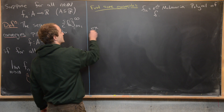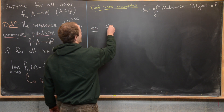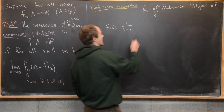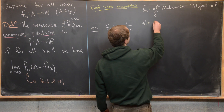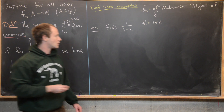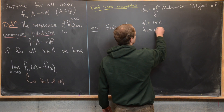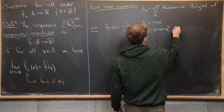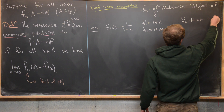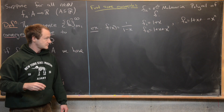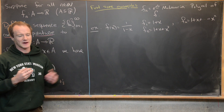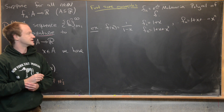For example, if f(x) equals 1 over 1 minus x, then f_1 equals 1 plus x — that's the degree-1 Maclaurin polynomial. f_2 equals 1 plus x plus x squared. And in general, f_n equals 1 plus x all the way up to x to the n. It's well known that this converges to 1 over 1 minus x by a straightforward power series argument.